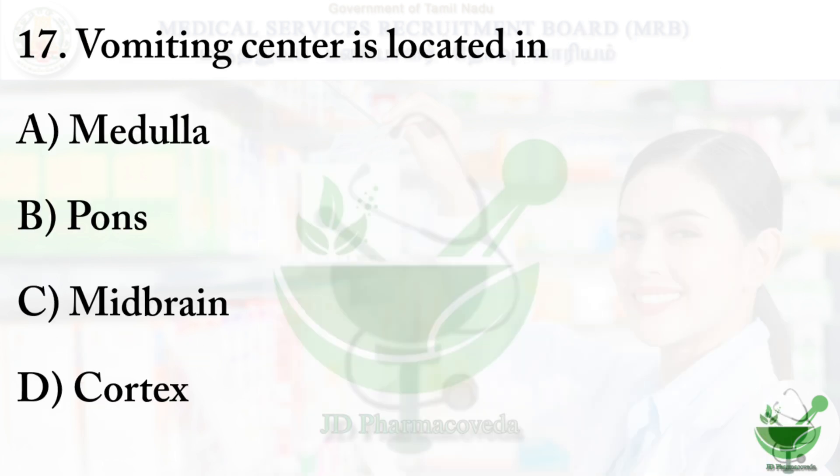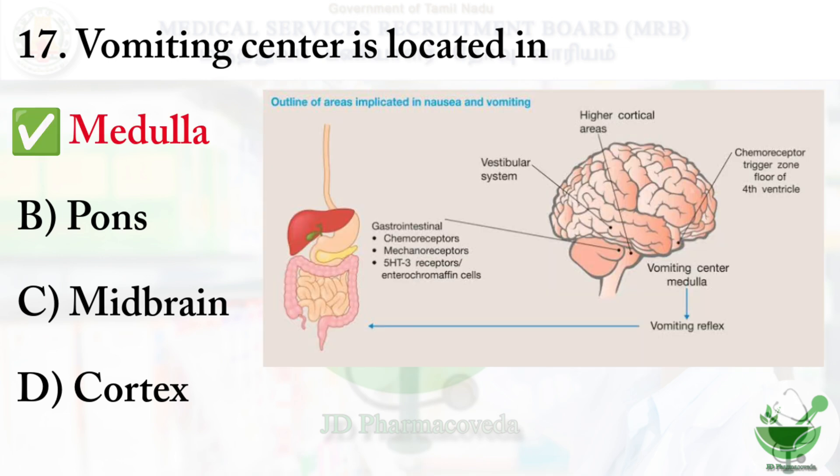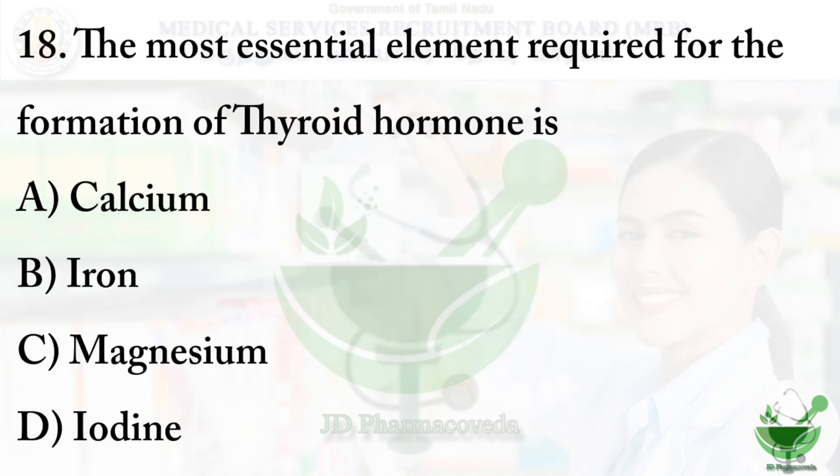Question number 17: The vomiting center is located in — A) Medulla, B) Pons, C) Midbrain, D) Cortex. The correct option is A — Medulla.